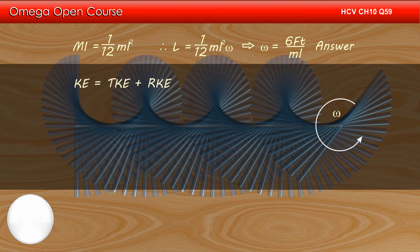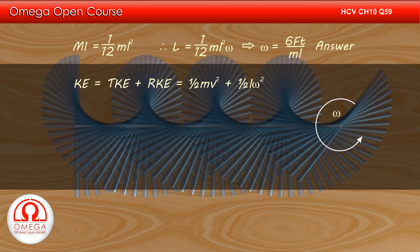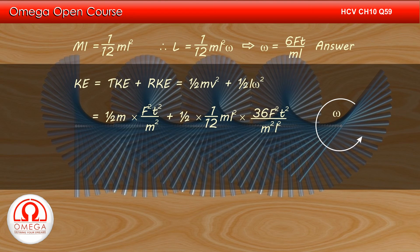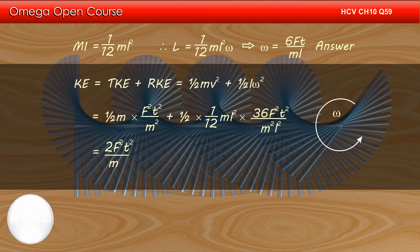The total kinetic energy of the rod is translational kinetic energy plus rotational kinetic energy. The translational kinetic energy is (1/2)mV² and the rotational kinetic energy is (1/2)I·omega². Putting in the values, we get kinetic energy equal to (1/2)m times F²T²/m² plus (1/2) times (1/12)mL² times 36F²T²/(m²L²). Simplifying, we get 2F²T² divided by m.